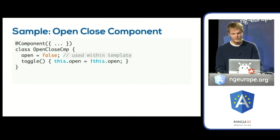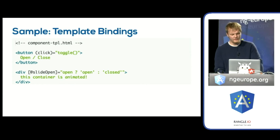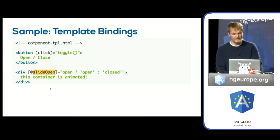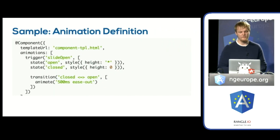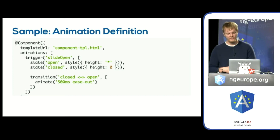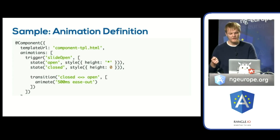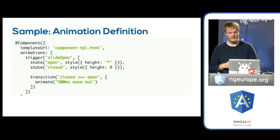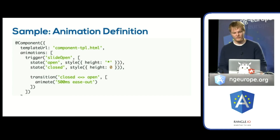Here we have an open and close component. When we toggle open and close, we fire an animation to show and hide the content. When it's open, we emit the open value; when it's closed, we emit the closed value. The slideOpen trigger is fired, and we pass values into the open and closed states. When it's closed, the height is zero; when it's open, the height is a star — meaning the value is detected at runtime to figure out the true height of the element. Animate between open and closed for half a second with an easing.